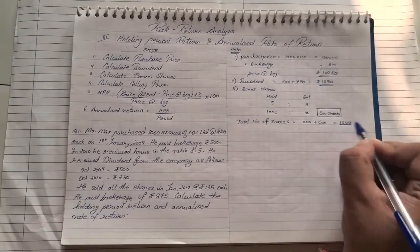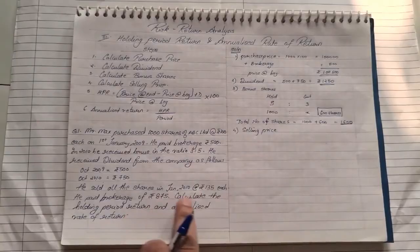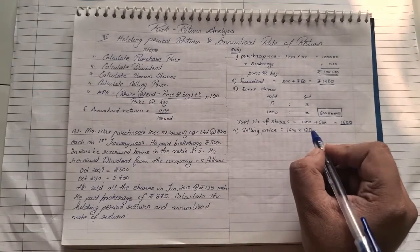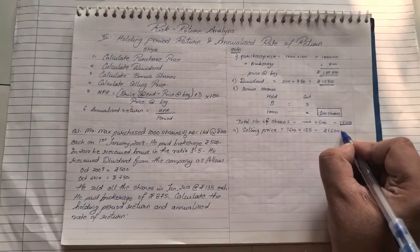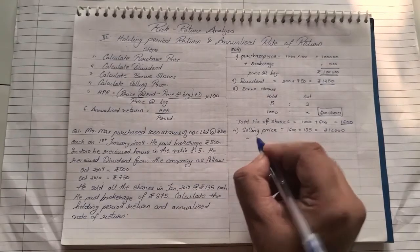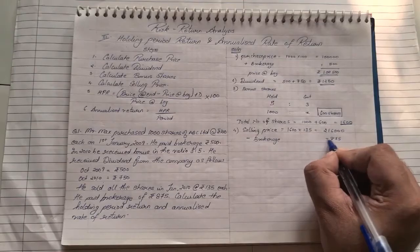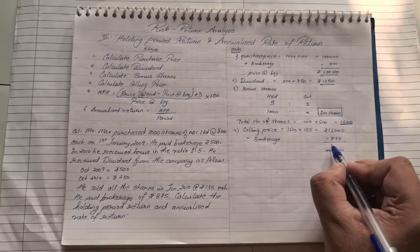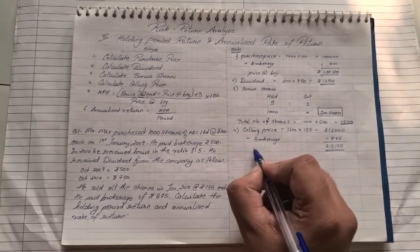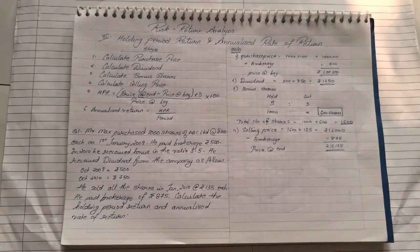Step four: calculate the selling price. He sold all 1600 shares at rupees 135 each, so 1600 × 135 = rupees 2,16,000. On sale we subtract brokerage, so we less rupees 875. Total selling price = 2,16,000 − 875 = rupees 2,15,125. This is also known as the price at the end.